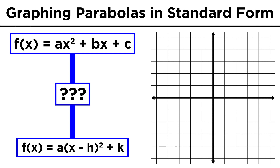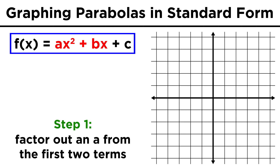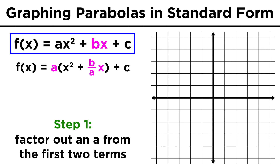Let's discuss how to do this to a generalized version of a parabola first. Starting from ax squared plus bx plus c, we want to get it into vertex form, where we have a out here, x minus h inside parentheses which is then squared, and then k out here. a, h, and k will then represent terms that stretch and shift the parabola so that it's easy to graph. The first thing we need to do is factor an a out of the first two terms. For ax squared we just lose the a, but for bx we end up with b over a times x.